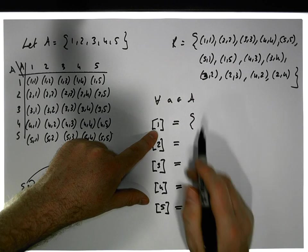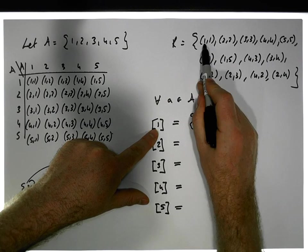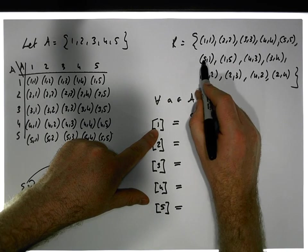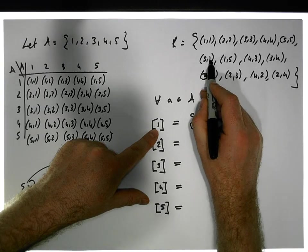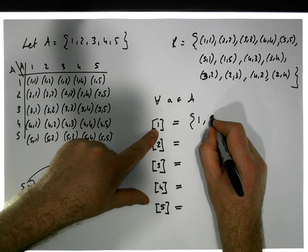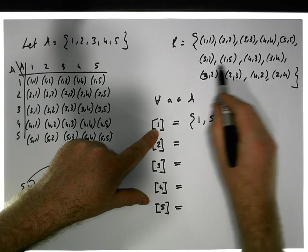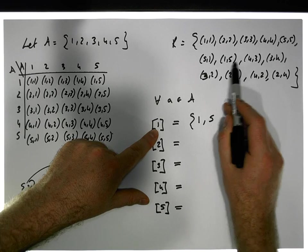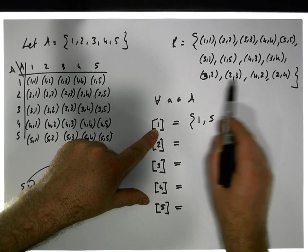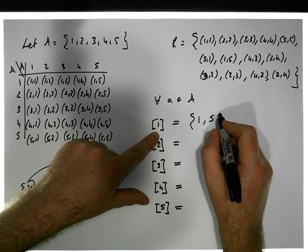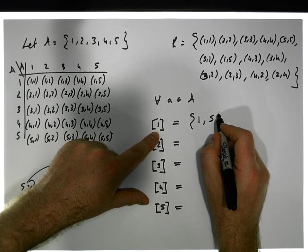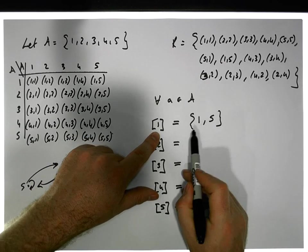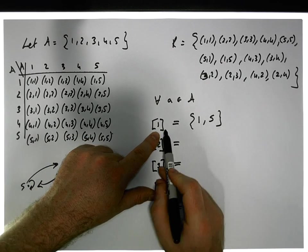What values is one related to in this set? Well, one is related to one, so one is in this set. What about anybody else? Five is related to one, so one is related to five, meaning five is in here as well. And one is related to five here, so that covers off that set. The equivalence class associated with one is {1, 5}.